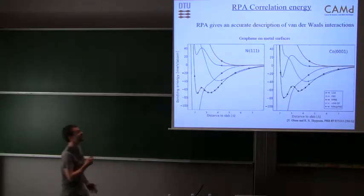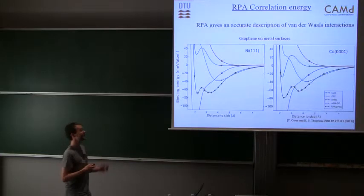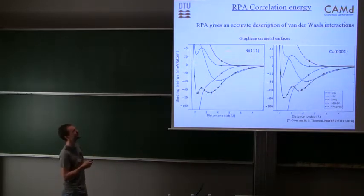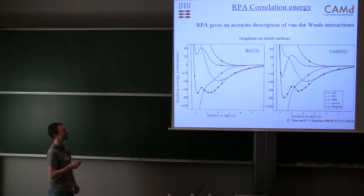Very nice things about RPA is that it naturally incorporates van der Waals effects because it's non-local. There are some particularly problematic cases like graphene on metal surfaces, where if you do a semi-local approximation for exchange correlation, you get very different results. For example, this is the very deep minimum obtained with LDA, and then up here we have PBE, and then the red one here is RPBE.